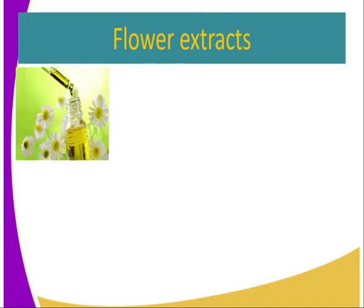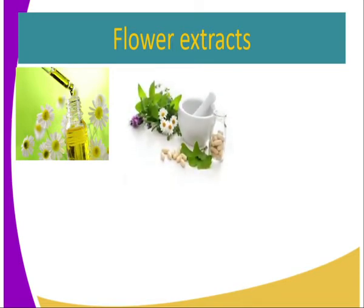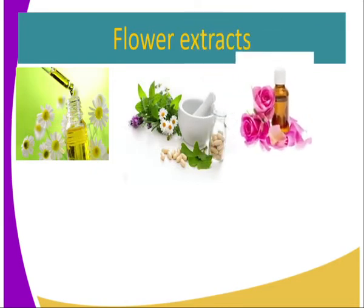Flowers have different pigments or chroma. So if we use a solvent extraction process, we can obtain the pigment within these flowers. If we crush these flowers using a pestle and mortar, adding a suitable solvent, we get the color that we require.